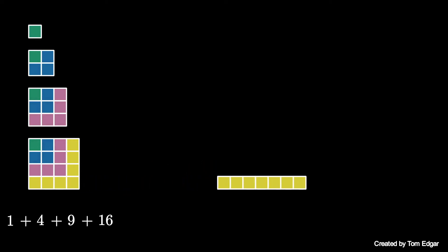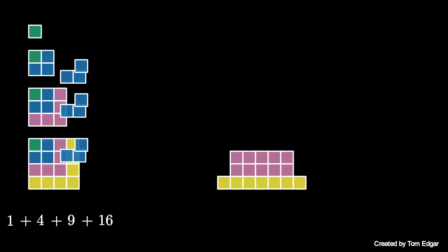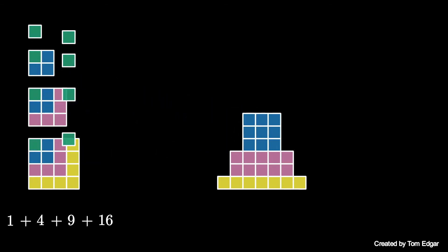By arranging the L-shaped gnomons from each of these squares, we get this tower, which consists of a 1 by 7, a 2 by 5, a 3 by 3, and a 4 by 1 stack of squares.